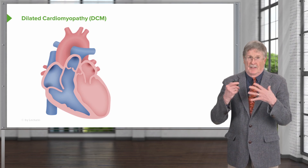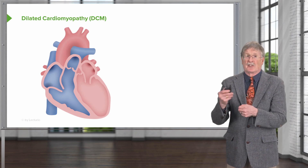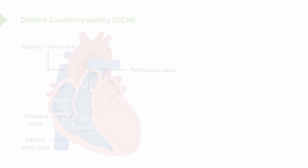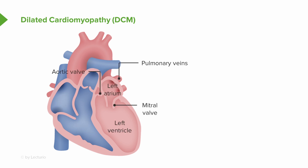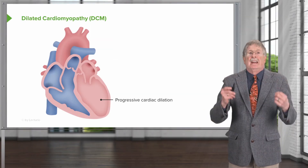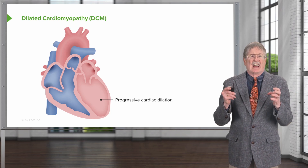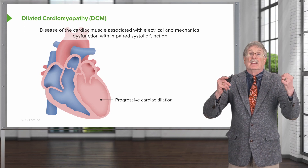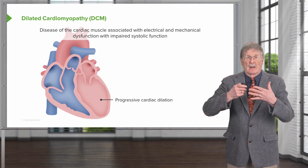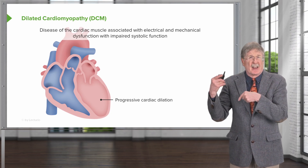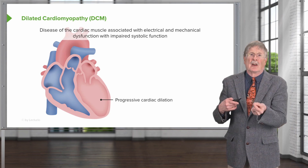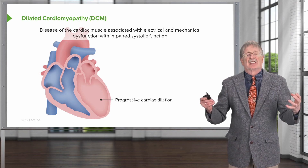Looking at the schematic showing all cardiac chambers: right-sided heart in blue — inferior and superior vena cava to the right atrium, through the tricuspid valve, to the right ventricle, through the pulmonic valve to the lungs — returning in pink to the left atrium via pulmonary veins, across the mitral valve, into the left ventricle and out the aorta. In dilated cardiomyopathy, we get progressive cardiac dilation. Stretching of the cardiac myocytes causes rearrangement of gap junctions connecting myocytes, producing electrical and mechanical dysfunction with impaired systolic function.